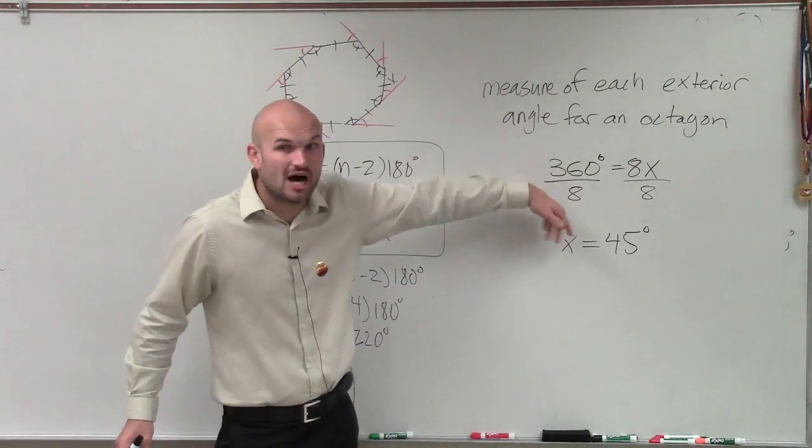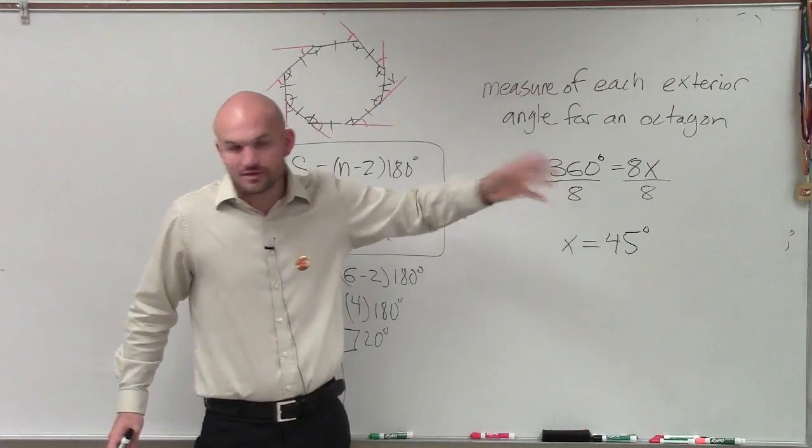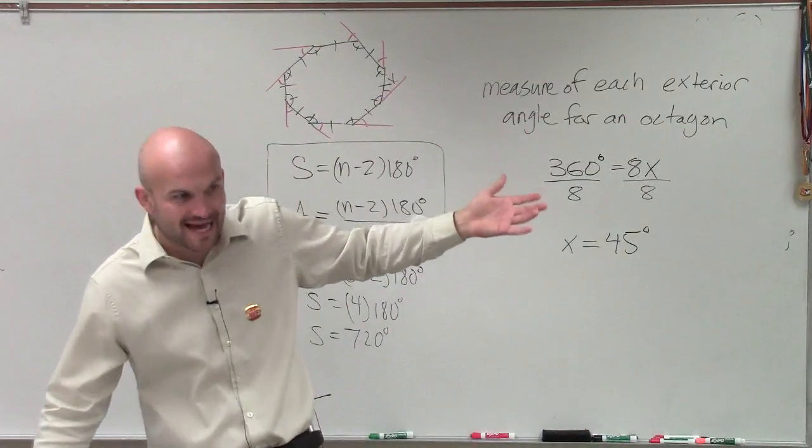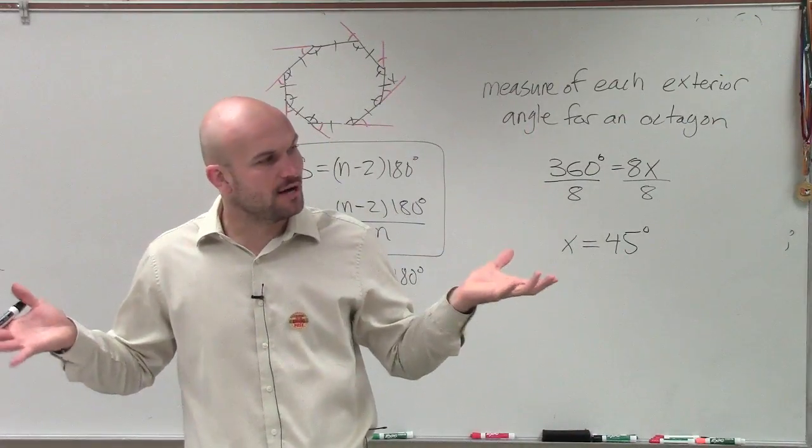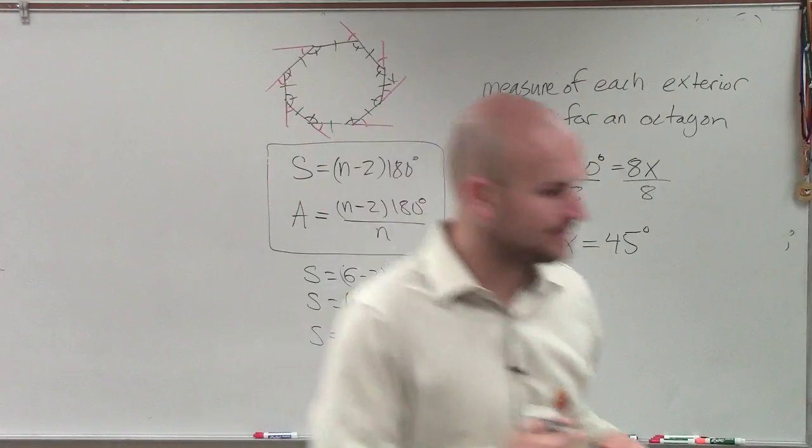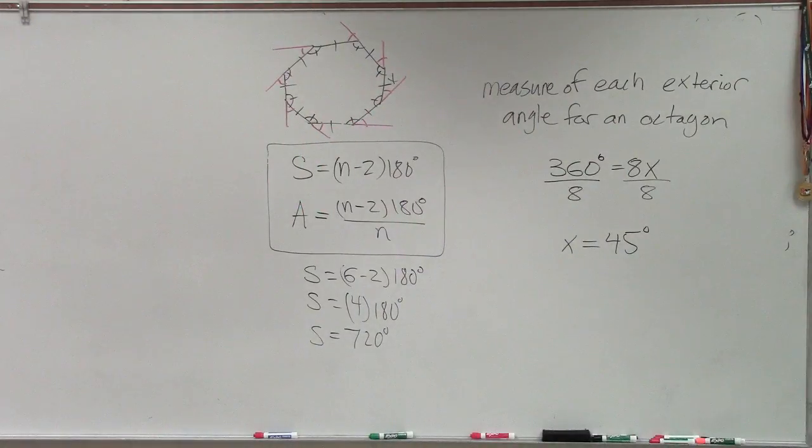So, guys, if you want to find the measure of one exterior angle, take the sum and divide it by the number of sides. All right.